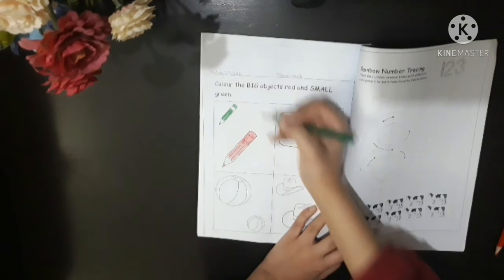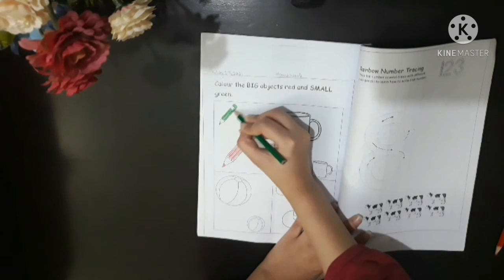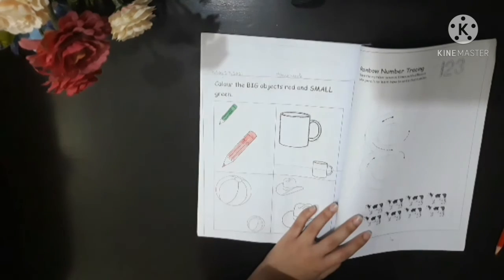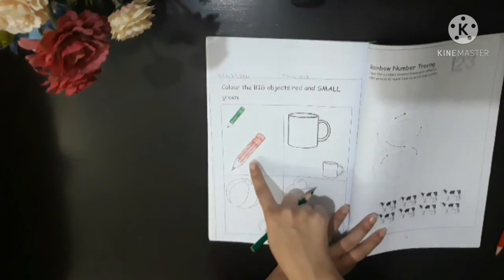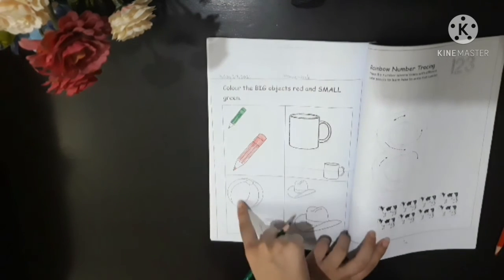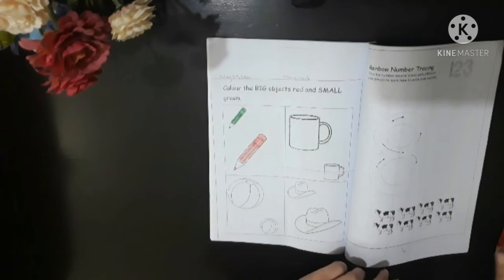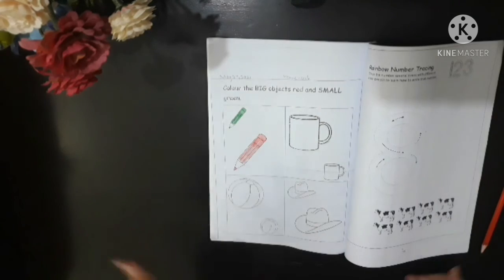Color it slowly. Color it nicely. And here we are done. Can you see it now? This is green, this is small. And this is big and it's red. This is how you will color all of these. And your homework will be done.